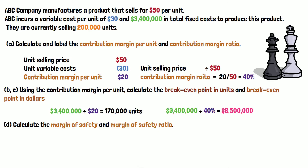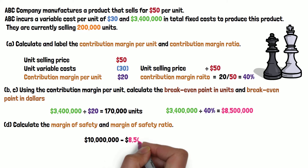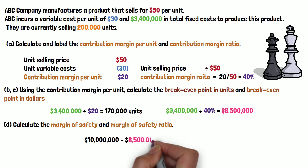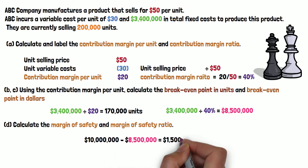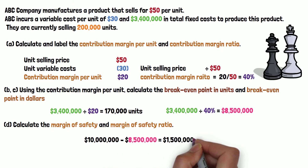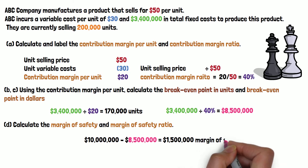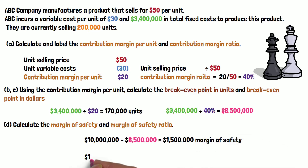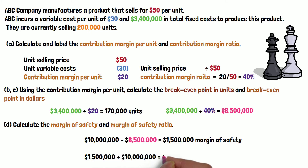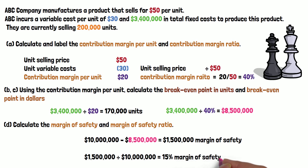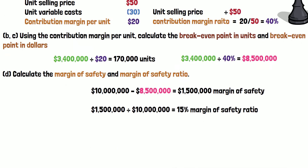The fourth question is to calculate the margin of safety and the margin of safety ratio. Actual sales are 200,000 units times $50, which is $10 million, minus the break-even dollar sales of $8.5 million, giving a margin of safety of $1.5 million. Divided by total sales of $10 million, we get a 15 percent margin of safety ratio.